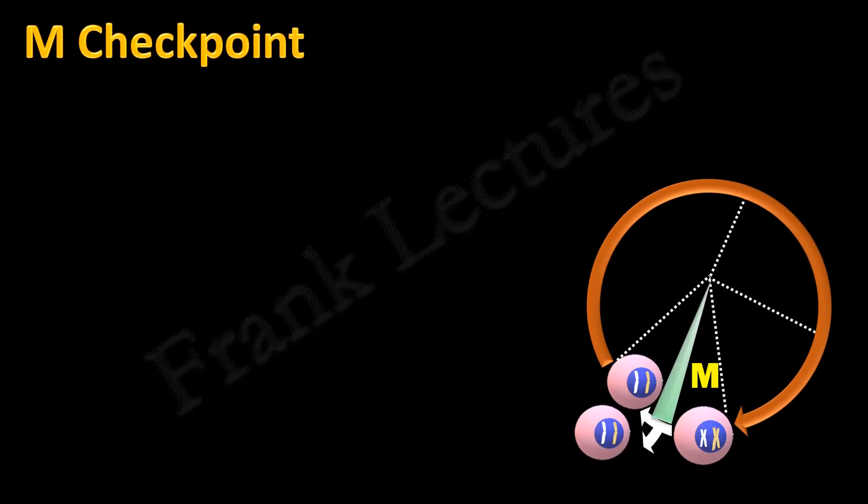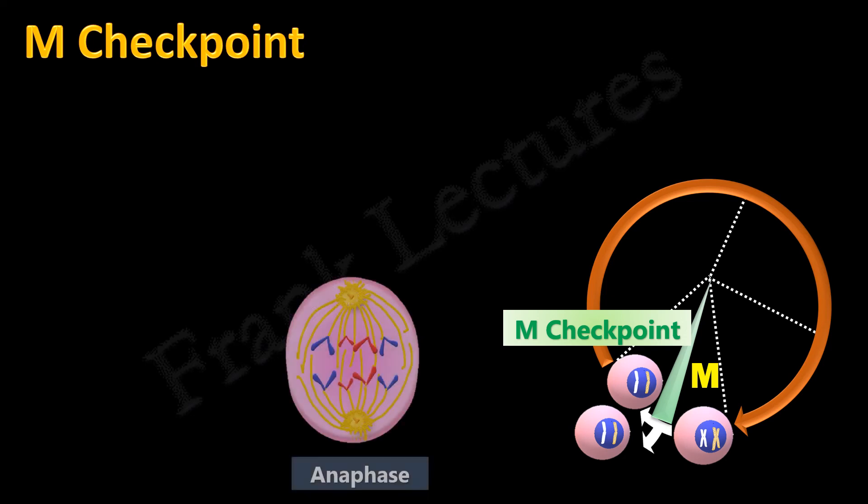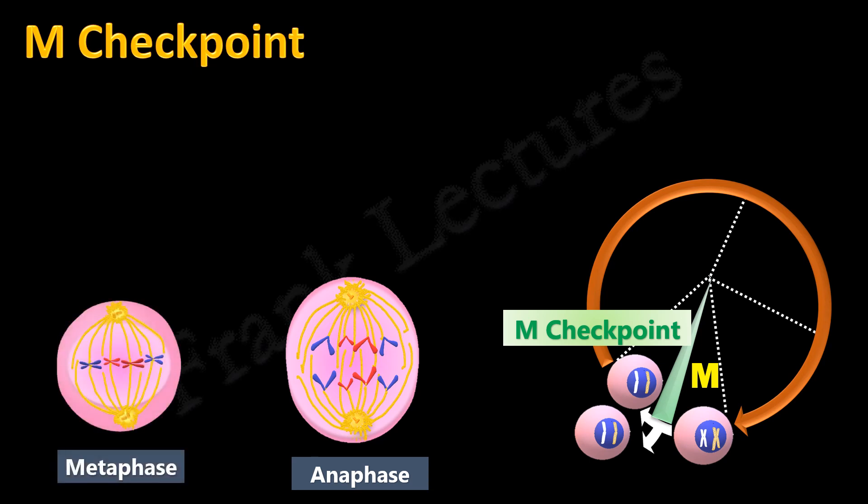The third checkpoint is known as M checkpoint. We know that in anaphase the chromosomes are separated. This is very crucial because this separation will distribute chromosomes equally in the two daughter cells. The accuracy of this separation depends on the proper attachment of all two chromosomes to the spindle during metaphase. Therefore, the third checkpoint occurs between metaphase and anaphase. This checkpoint makes sure that chromosomes are properly attached to the spindle apparatus.